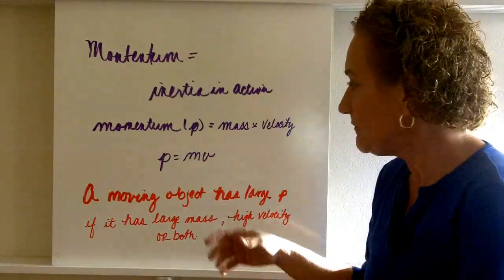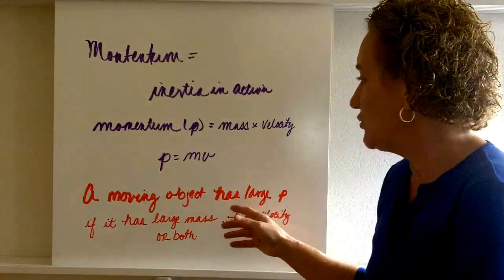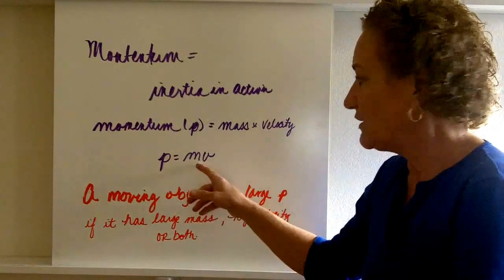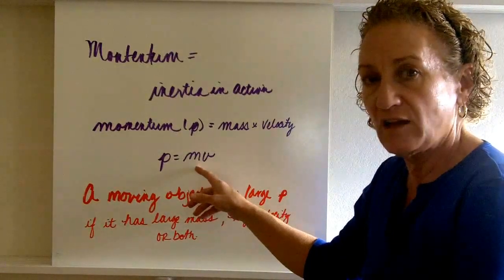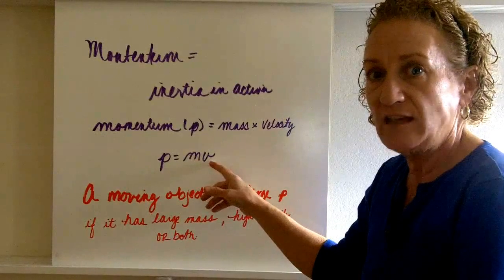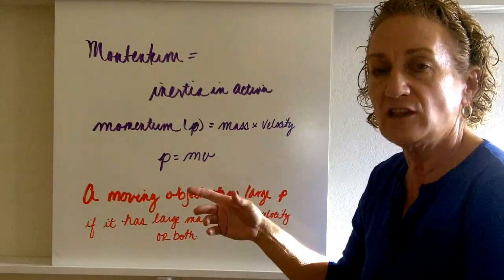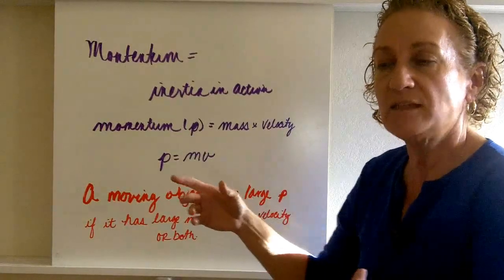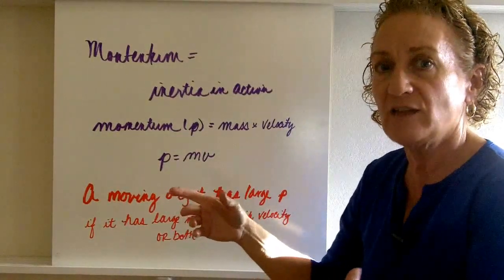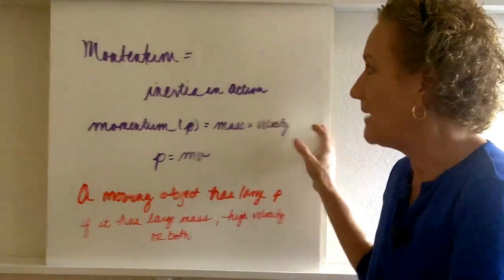A moving object has a large momentum if it has a large mass, like the truck, or it has a large velocity, or it has both. So there's a bunch of different ways that you can get a large momentum, and all of it depends on mass and velocity. Those are the two things we're looking at.